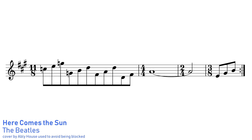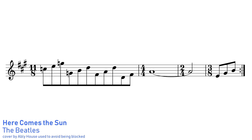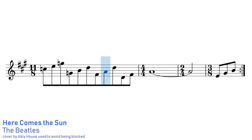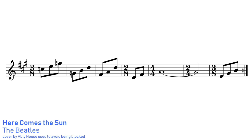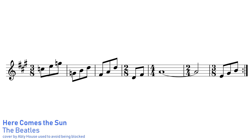Sometimes, rather than a whole song being in 11/8 time or even a whole section, we'll just see a one-off bar of 11/8 thrown in with other time signatures. For example, this metrically unusual section in Here Comes the Sun by The Beatles can be interpreted as a bar of 11/8, followed by a bar of 4/4, a bar of 2/4, and a bar of 3/8. Personally, I would prefer to see it with the bar of 11/8 broken up into three bars of 3/8 and one bar of 2/8, as it gives the performer more information about which beats to accent during this rhythmically complex passage.